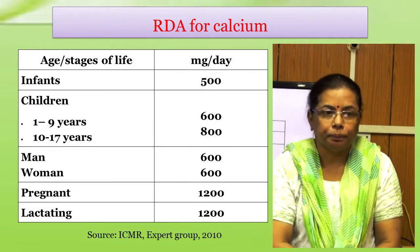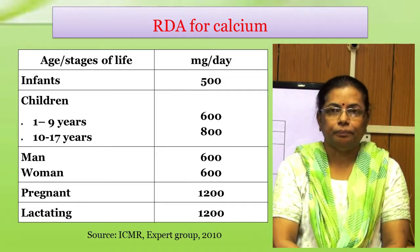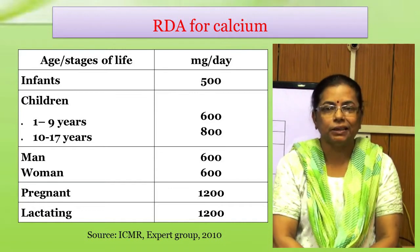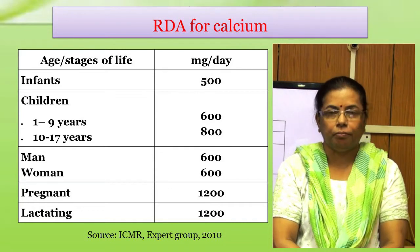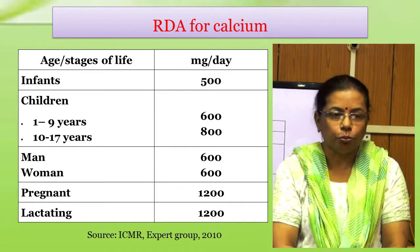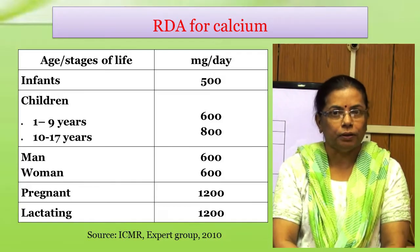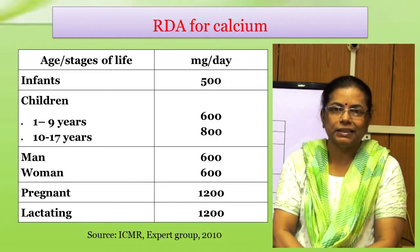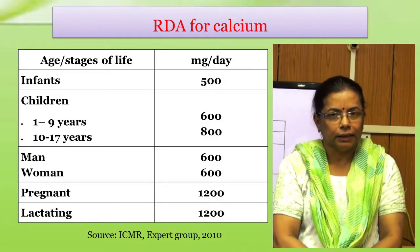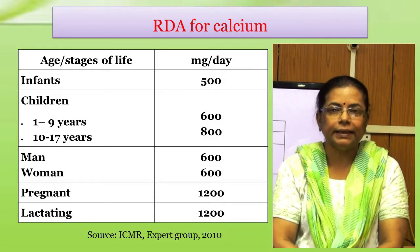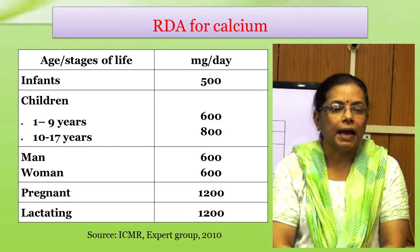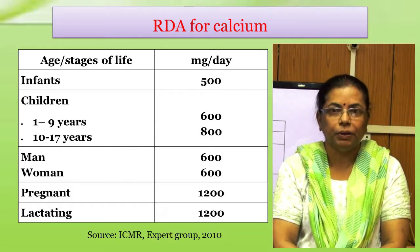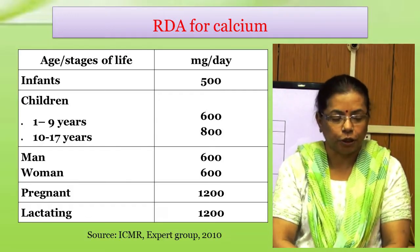RDA for calcium: A daily allowance of 600 mg has been recommended for adult men and women. During pregnancy and lactation, the need increases and an additional 600 mg has been recommended.